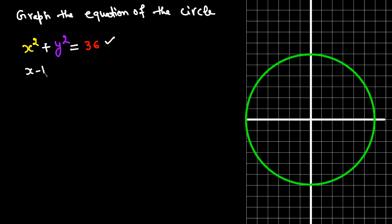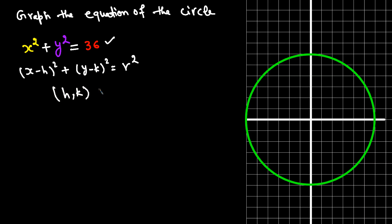Comparing the given equation with the standard form, H and K are both 0, which tells us the center of this circle is at the origin (0, 0).